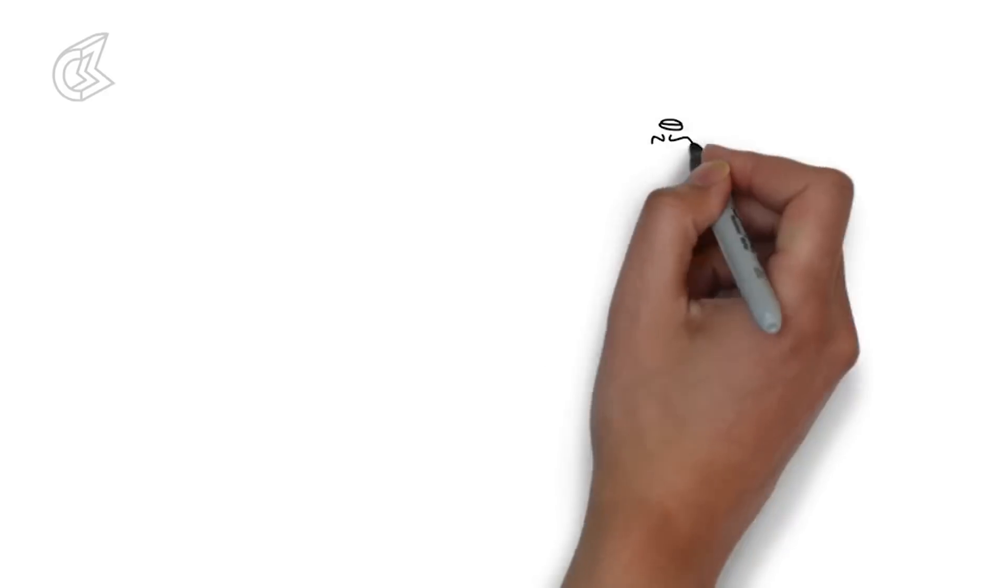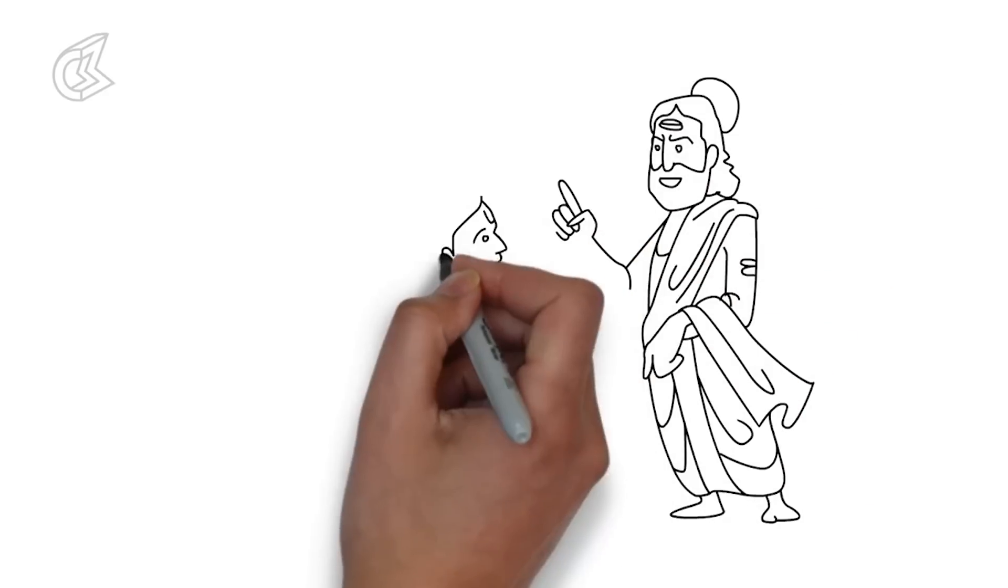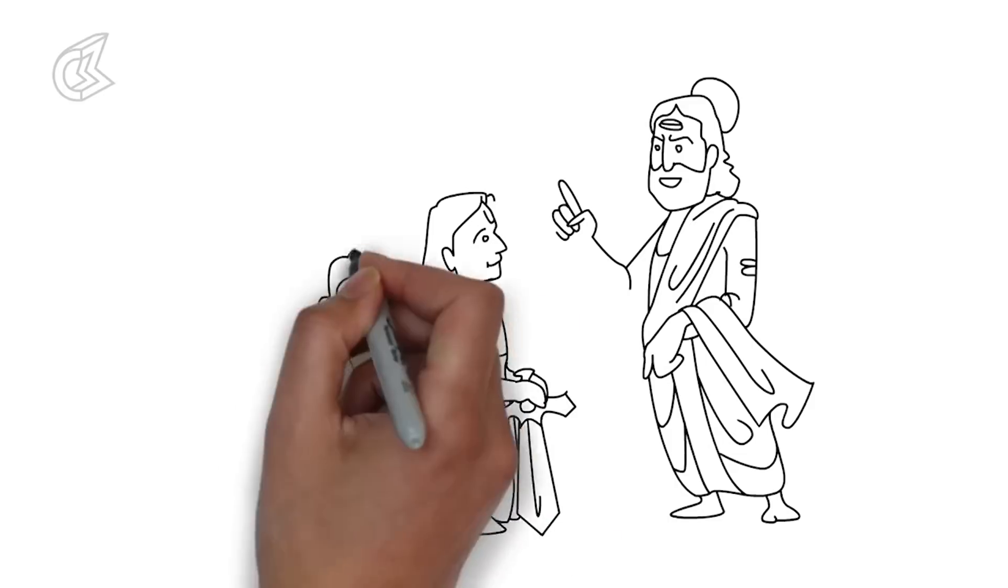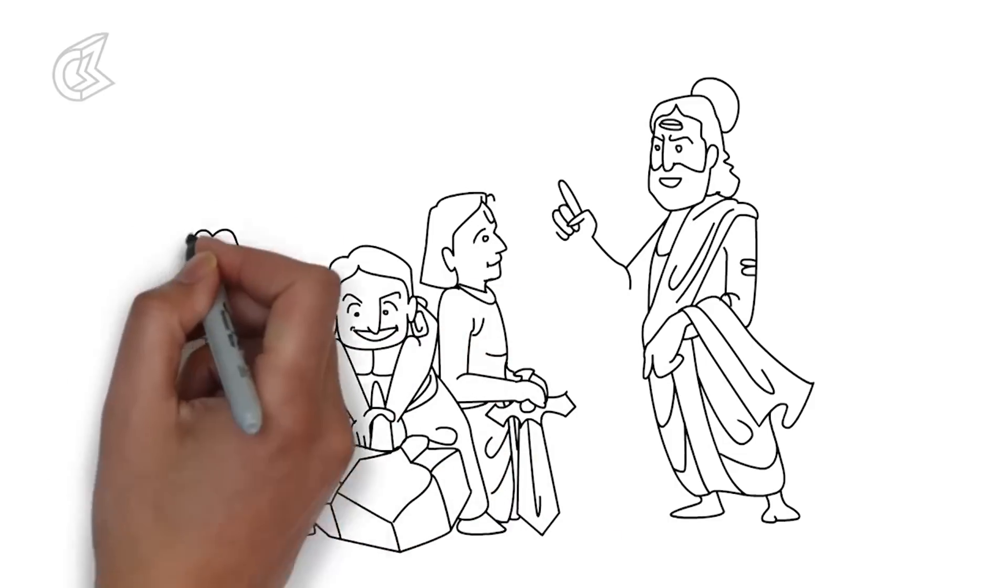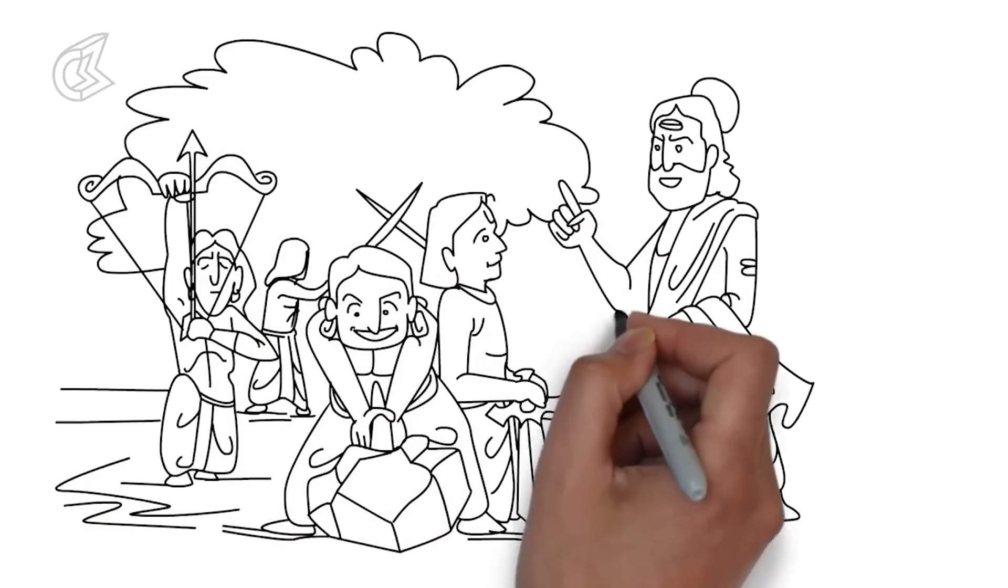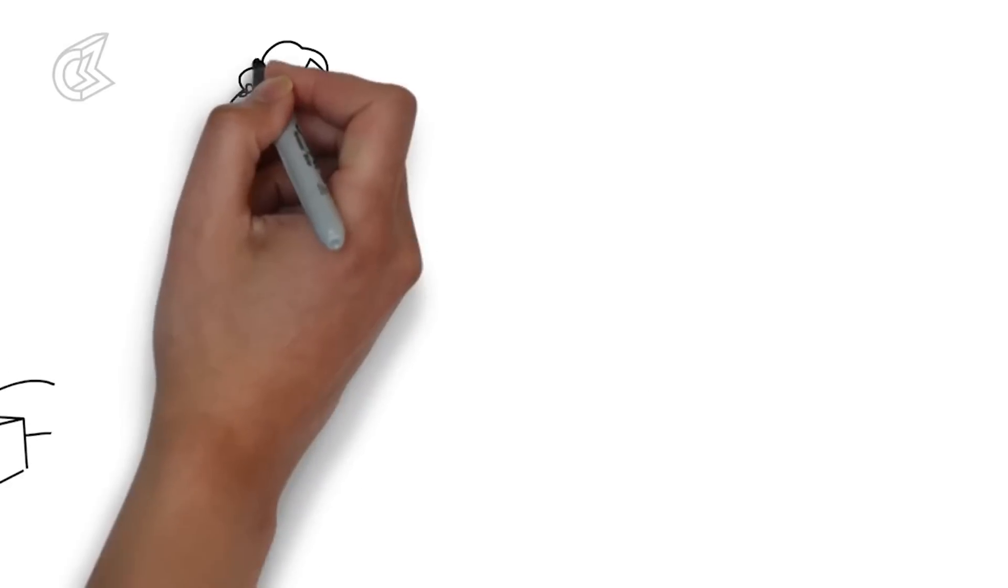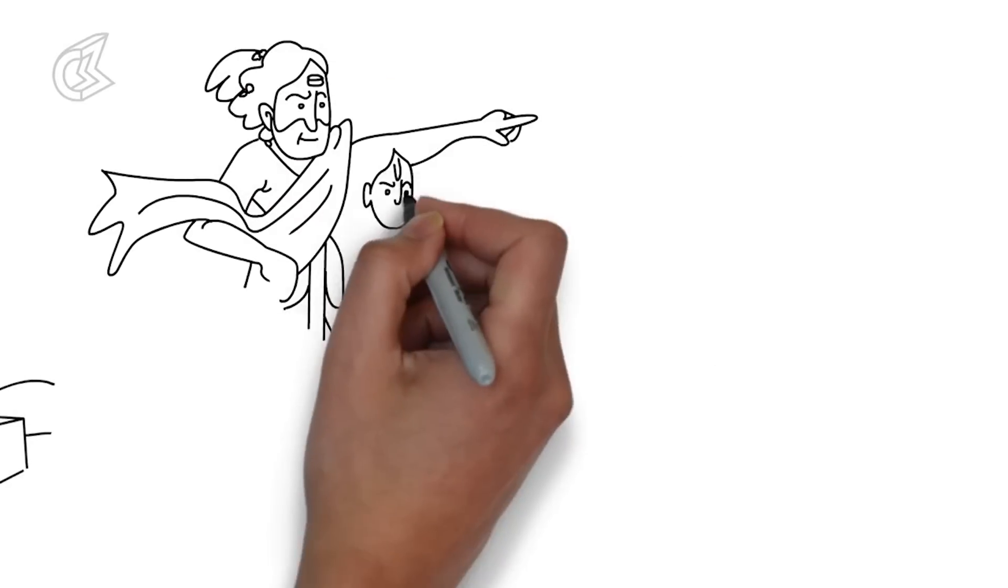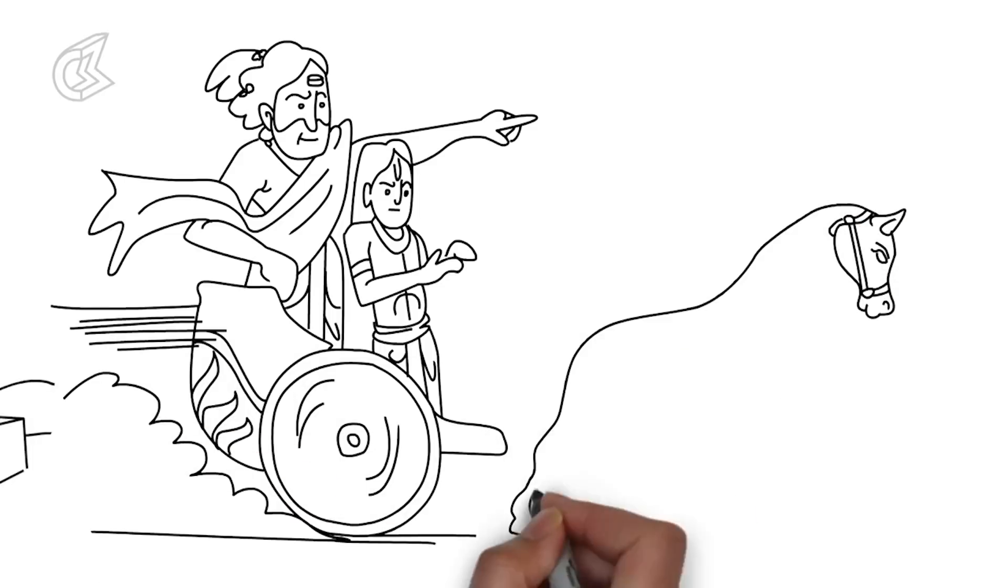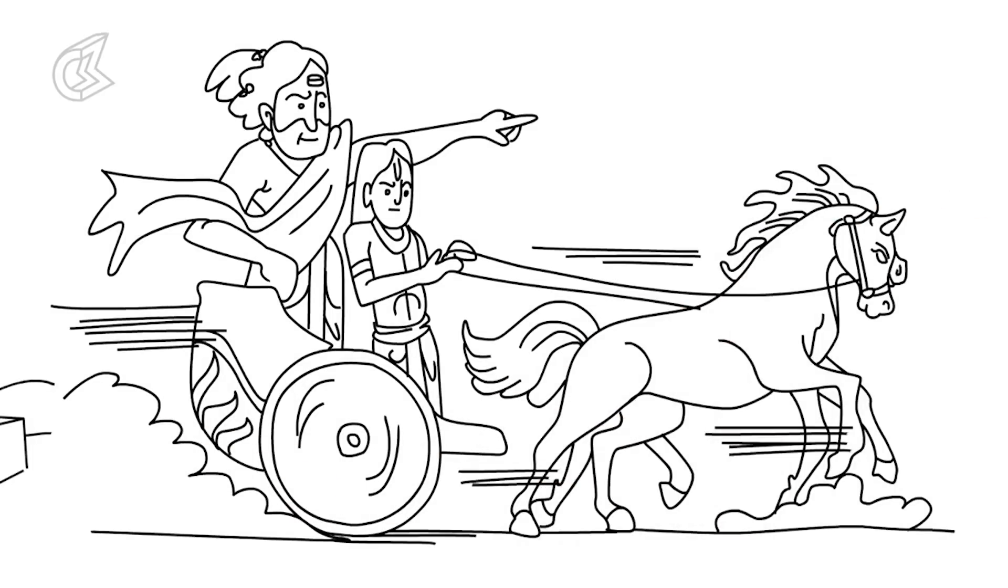Under the expert eye of Dronacharya, the Pandavas began to learn the ways of war. Dronacharya's skill with weapons and techniques of war was rivaled only by his eye for talent. He observed his students closely and recognized their abilities early on. Yudhishtir, for example, proved to be an excellent charioteer. He took to navigating the battlefield like a fish to water and quickly became the best person to have behind the reins.